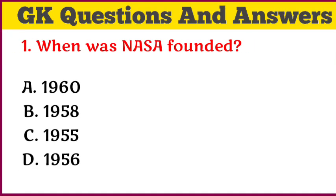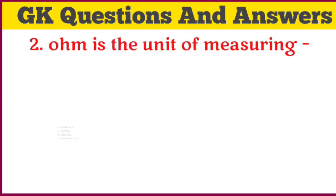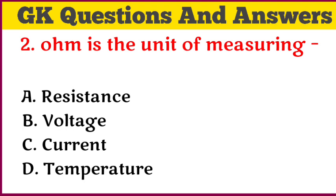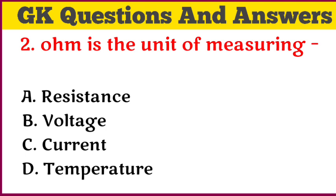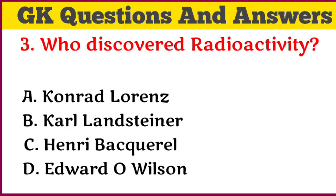When was NASA founded? Answer: 1958. Ohm — as the unit of measuring? Answer: resistance. Who discovered radioactivity?